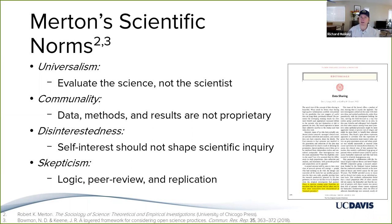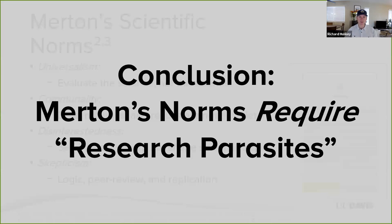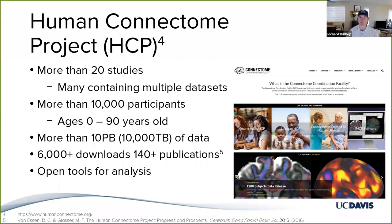With these in mind, we can reevaluate this data sharing editorial article and actually come to the conclusion that Merton's norms require research parasites. Today I'm going to tell you about two research initiatives that are built around what we might call a parasite model and have been incredibly successful for knowledge generation. The first is known as the Human Connectome Project, from the field of cognitive neuroscience, organized around understanding the relationship between structure and function in the human brain.